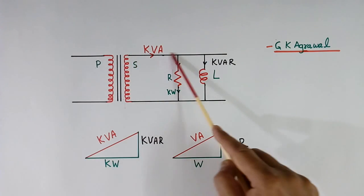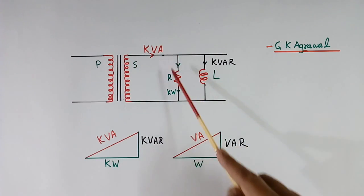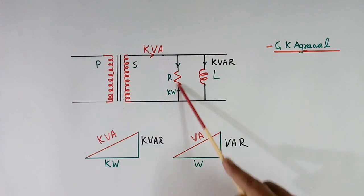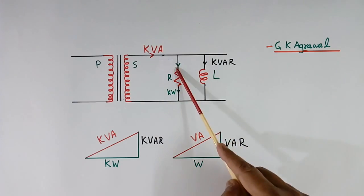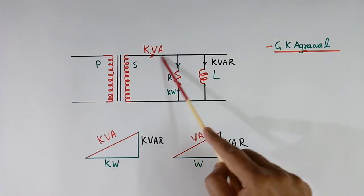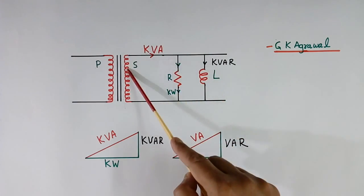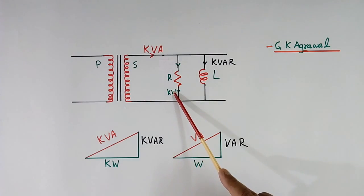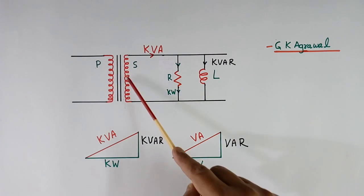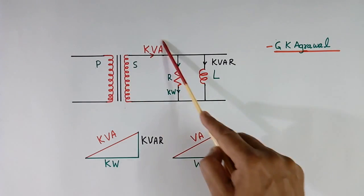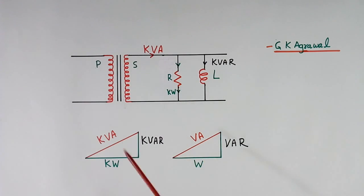So here, not only kW power is flowing — both powers are flowing. Because kVA power is flowing in this transformer, not only kW, the transformer is rated in kVA, not in kW.